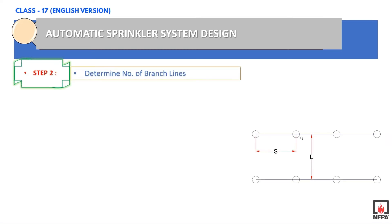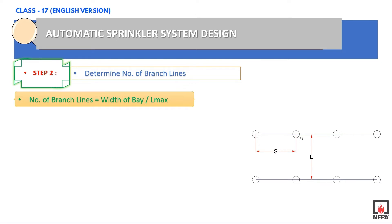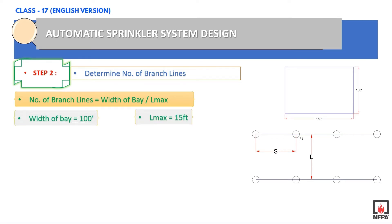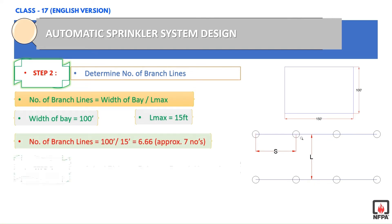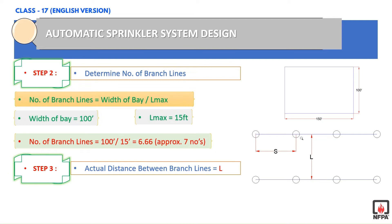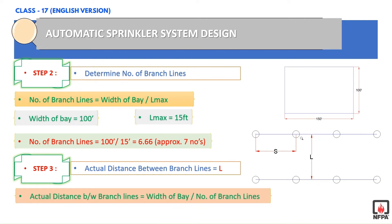Step 2: The formula for calculating the number of branch lines is the width of the bay divided by the maximum distance between sprinklers (Lmax). Here, the width of the bay is 100 feet and Lmax is 15 feet, so the number of branch lines will be around 7. Step 3: We calculate the actual distance between branch lines (L), using the formula: width of bay divided by number of branch lines. The actual distance between branch lines will be around 14 feet.